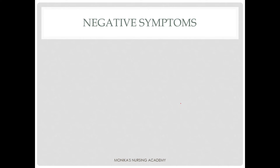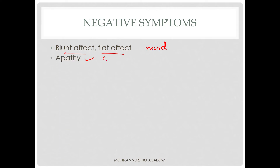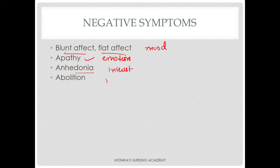Next we will discuss negative symptoms of schizophrenia. Negative symptoms include: blunt affect or flat affect, meaning the patient's mood remains blunt or flat regardless of whether the situation calls for sadness or happiness; apathy, meaning lack of emotions — emotions are absent in the patient; anhedonia, meaning lack of interest — the patient has very little interest in anything; and avolition, meaning lack of motivation — the patient is not motivated to start any task, also called lack of initiation.